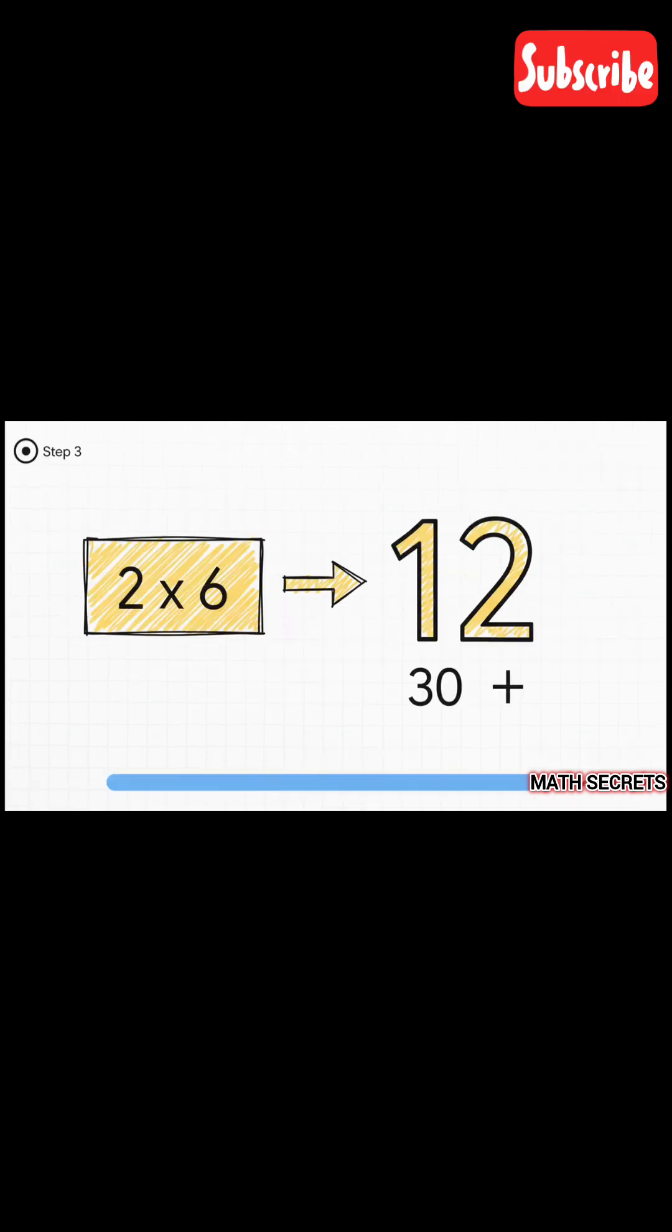And step three is just as simple. We solve the second part. 2×6 is just doubling six, which gets us 12. So now our whole problem is just a simple addition: 30 plus 12.